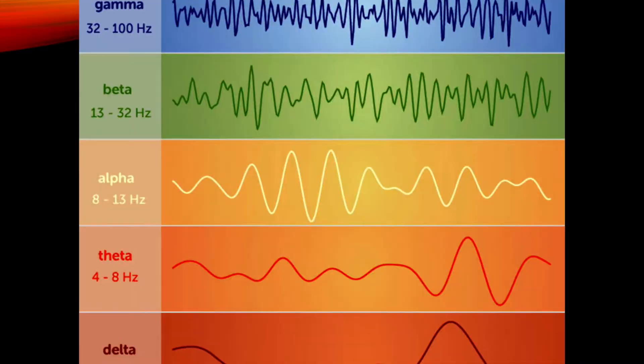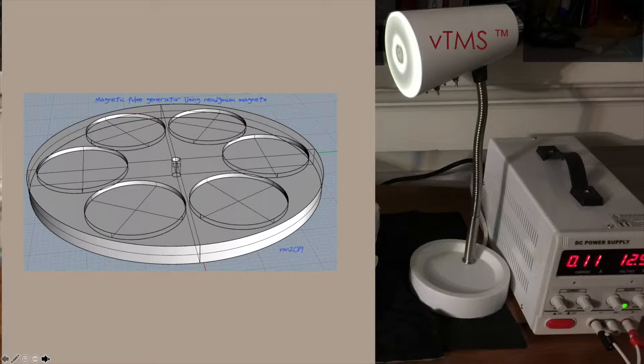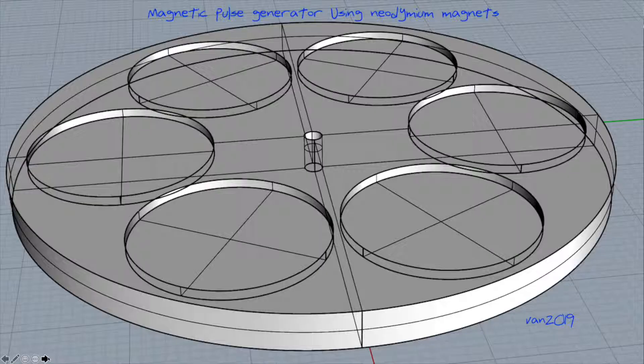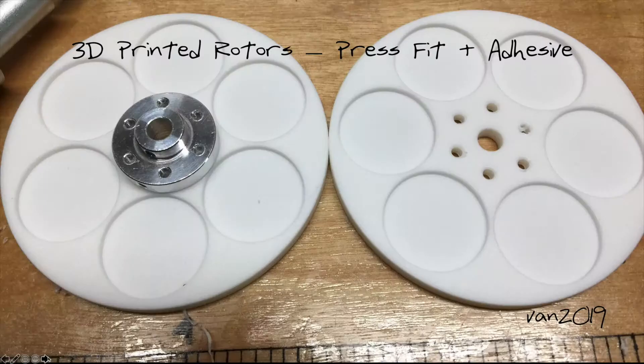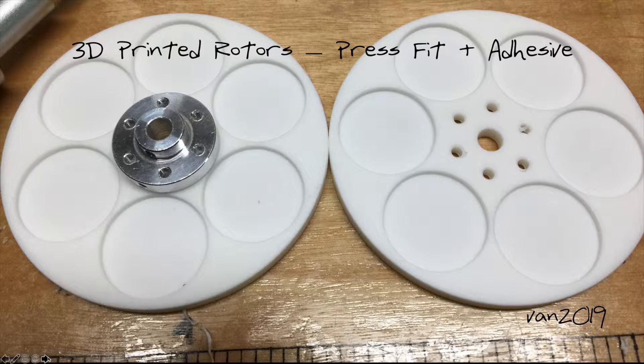So here's the magnetic pulse generator holder. That's just basically a plastic disc that is magnetically transparent and holds the one inch neodymium magnets. These are then 3D printed such that there was a press fit for the magnets. I was really pleased with how these turned out and how accurate the tolerances were. The silver thing on the left is the hub adapter that adapts the rotors to the motor.